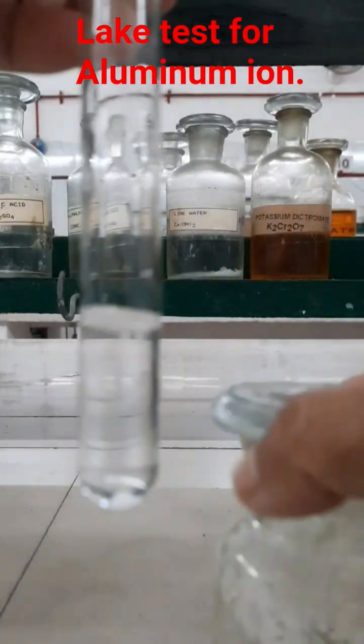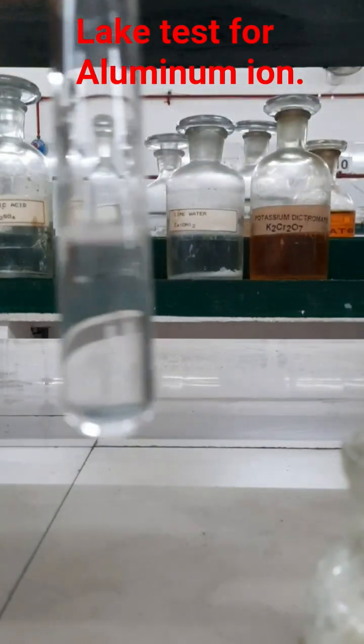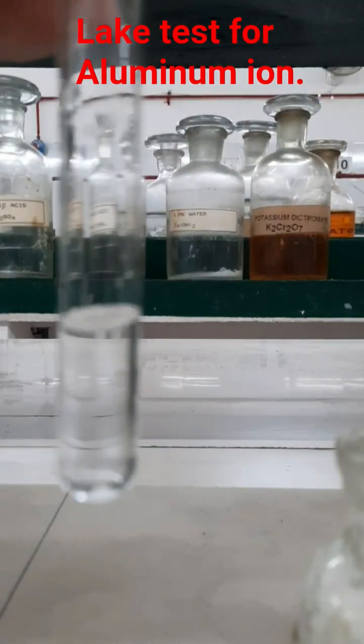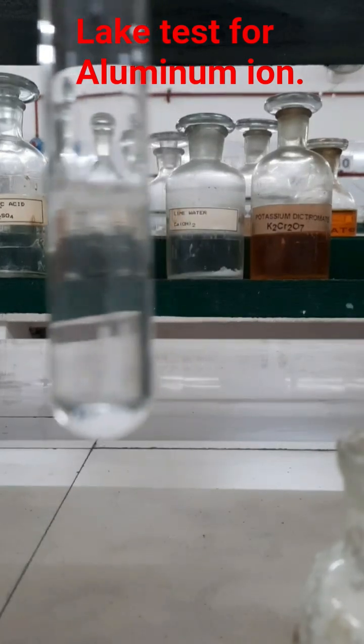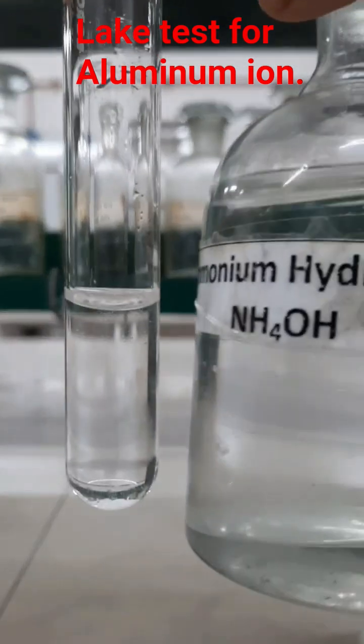Now you have to add the group reagent. First of all, you have to add a pinch of solid ammonium chloride salt into it and dissolve it completely. Then you have to add ammonium hydroxide solution into it.